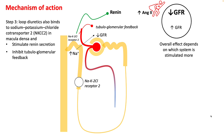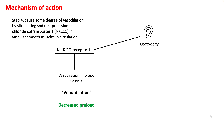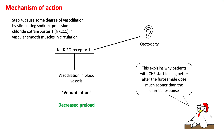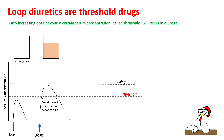Loop diuretics also stimulate the NKCC2 type 1 channel in the ear, causing ototoxicity, and in blood vessels they cause vasodilation — importantly, venodilation — which decreases preload. This explains why patients with heart failure feel much better after a dose of Lasix sooner than their diuretic response, because of this venodilation and decreased preload effect. Loop diuretics are threshold drugs: if you do not exceed a certain serum concentration, you will have no diuresis, and the amount of diuresis depends on the period of time that serum concentration remains above this threshold.